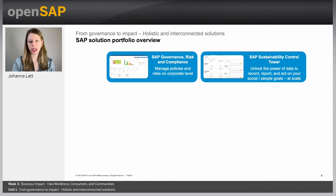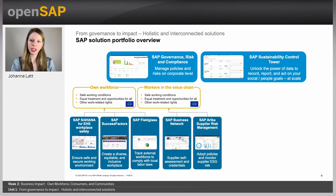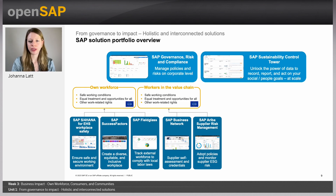Beyond that, we have solutions supporting the different lines of businesses. Taking the structure from the CSRD regulation, we look at the own workforce first — ensuring safe working conditions, equal treatment and opportunity. SAP S/4HANA for EHS Workplace Safety can help ensure safe working conditions. SAP SuccessFactors helps create and maintain a diverse, equitable, and inclusive workforce. With SAP Fieldglass, you can track your external workforce such as contractors and ensure compliance with local labor laws. For workers in the value chain, SAP Business Network together with SAP Ariba Supply Risk Management supports monitoring your supply chain, supplier self-assessment, credential and certificate checks, and ESG risk monitoring.